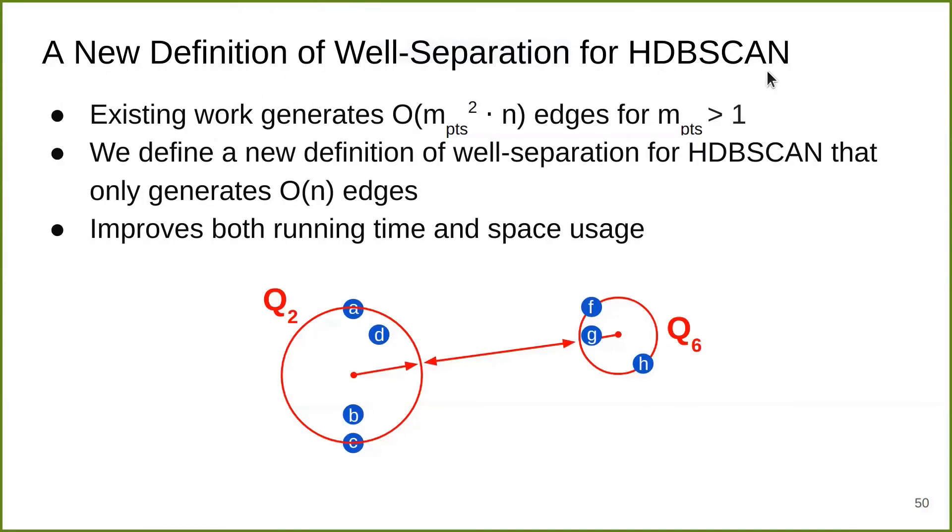We also define new definitions of well-separated pairs for the HDBSCAN problem. I've been using parameter m equals 1, which essentially makes HDBSCAN equivalent to the Euclidean MST problem. Existing work that adapts to cases where m is larger than 1 actually generates order of m squared times n edges for the base graph before computing the MST, which is quite expensive. For our work, we define new definitions that only generate a linear number of edges. This improves both running time and space usage in theory and practice.